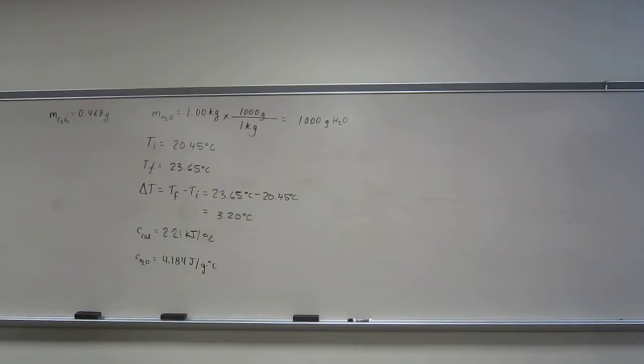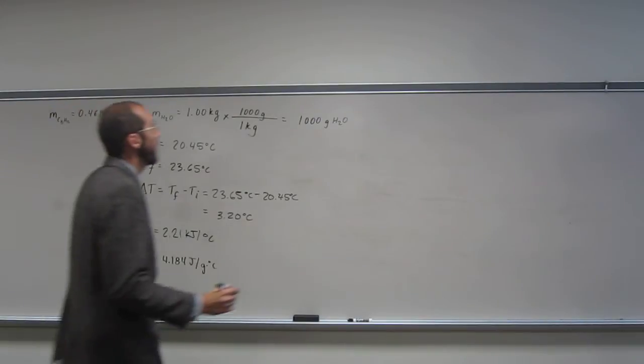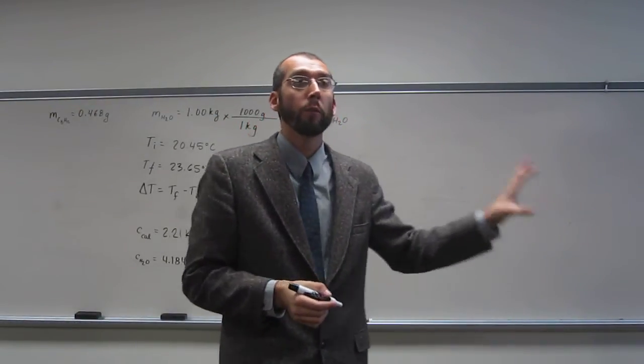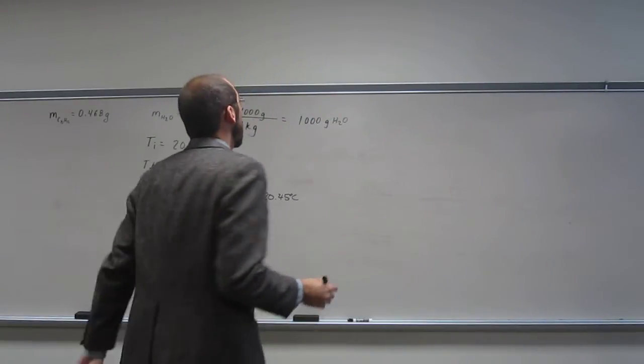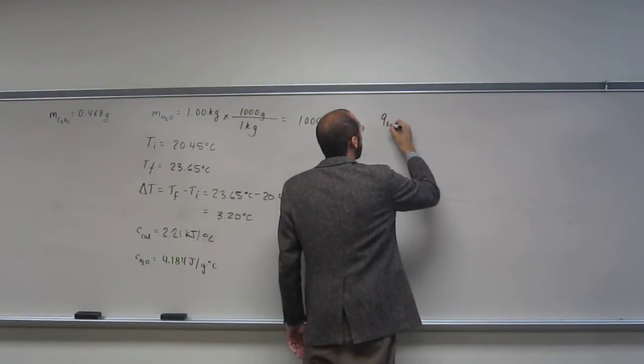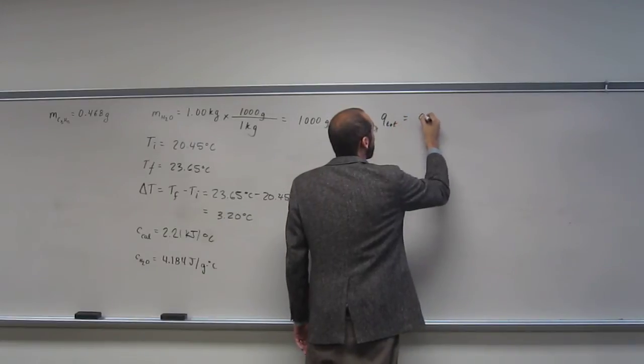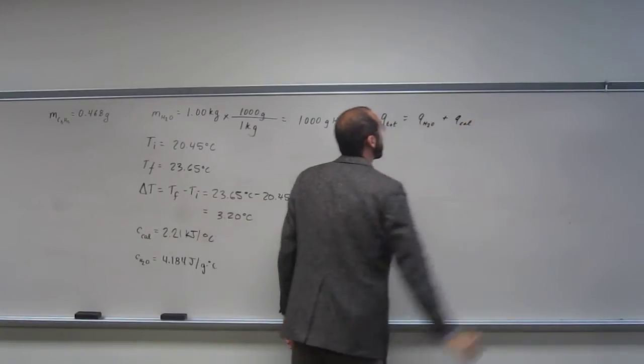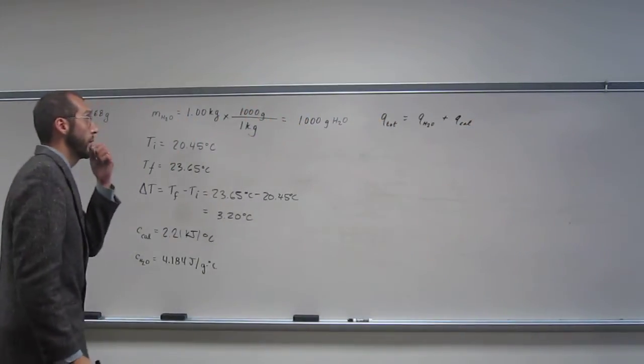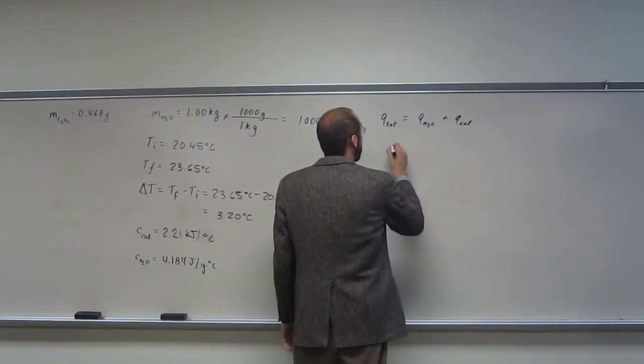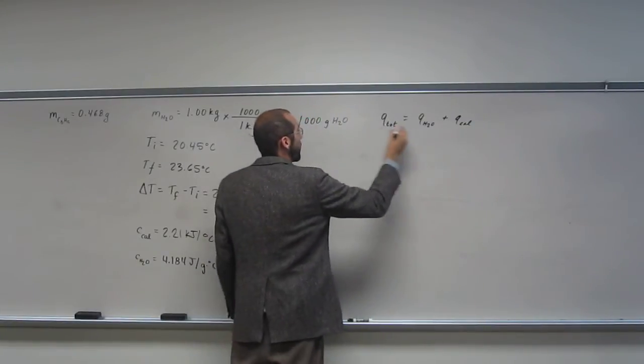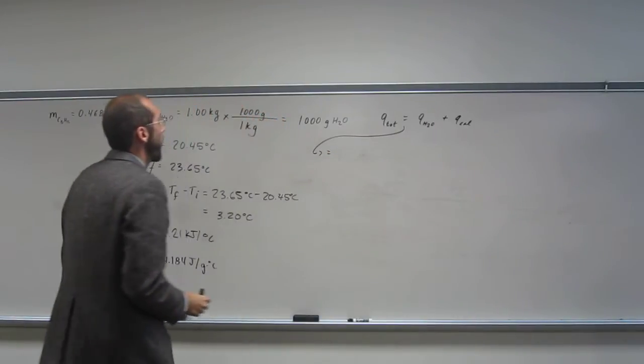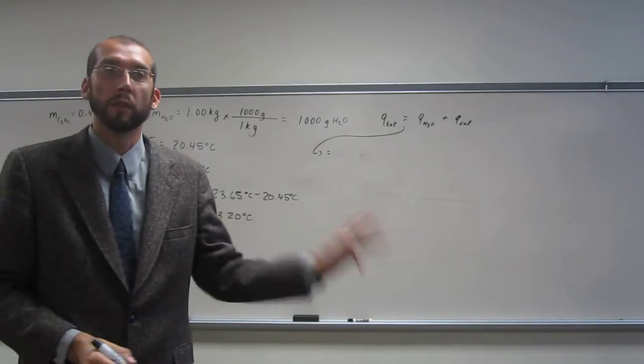So how do you do this problem? The way to do this problem, first you've got to figure out what is the heat that got from your particular reaction. So the Q total is going to equal the Q of the water plus the Q of the calorimeter. Because that's the whole system.